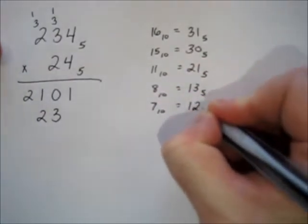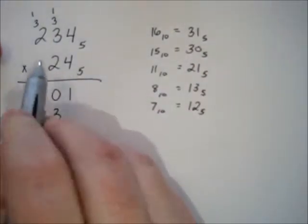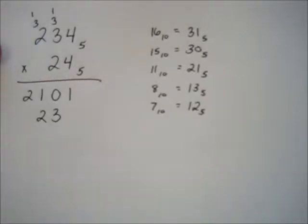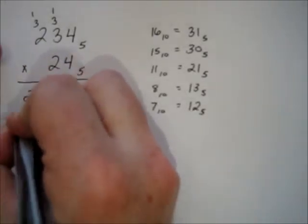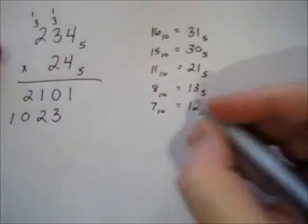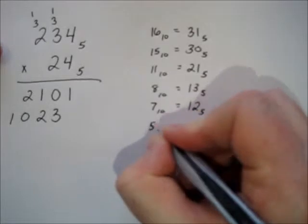Two times three is six, plus the one we carried is seven — one five and two left over. Then two times two is four, plus the one we carried is five, which is one five and zero left over.